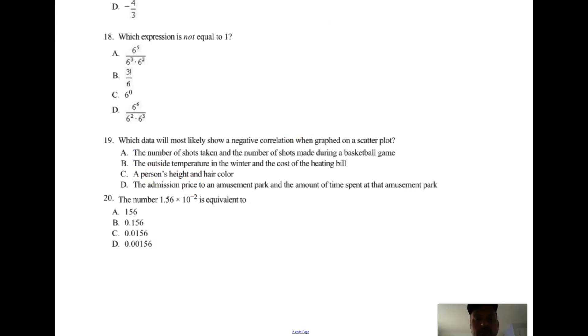Number 20: 1.56 times 10 to the negative 2. So scientific notation - negative exponent does not mean negative number, it means small number. The exponent tells you how many places you can move the decimal point. So 1.56 times 10 to the negative 2, I would move it two places to the left: 0.0156, choice C. And again, if at any point I go too fast or you miss something, just back it up. You know the drill.